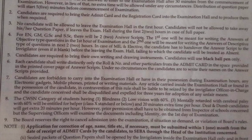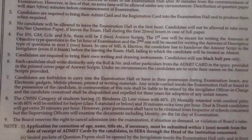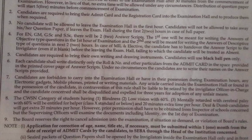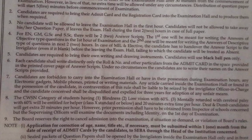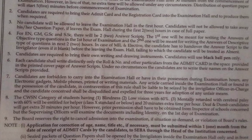Candidates in the CWS category — those with blindness or low vision with 60% or more, or cerebral palsy with 60% — will be entitled to a helper of class 10 standard or below, and 20 minutes of extra time per hour.